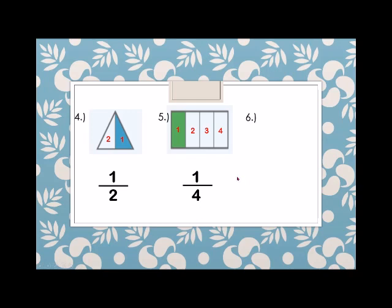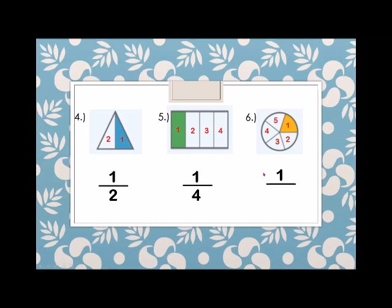Another example: we have a circle again. How many shaded parts? 1. So we have 1 over how many parts? 2, 3, 4, and 5. So the denominator is 5.